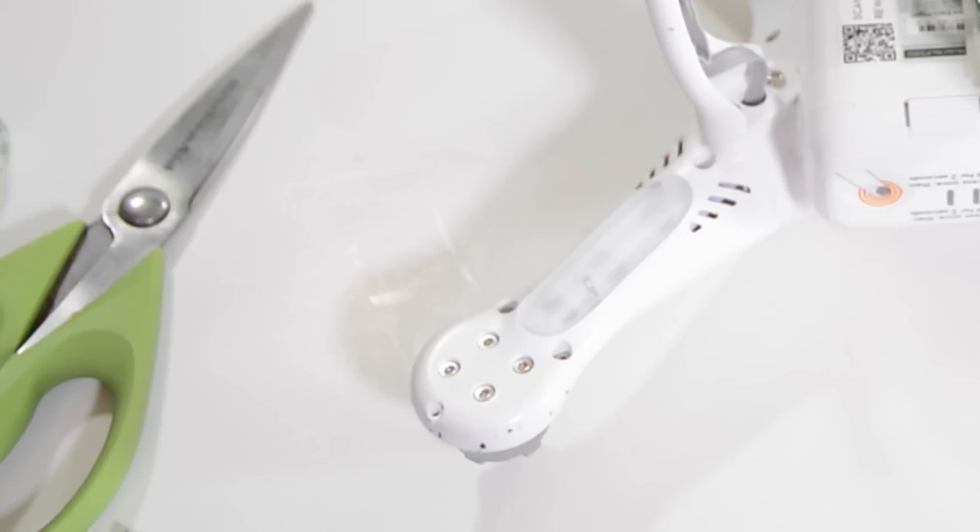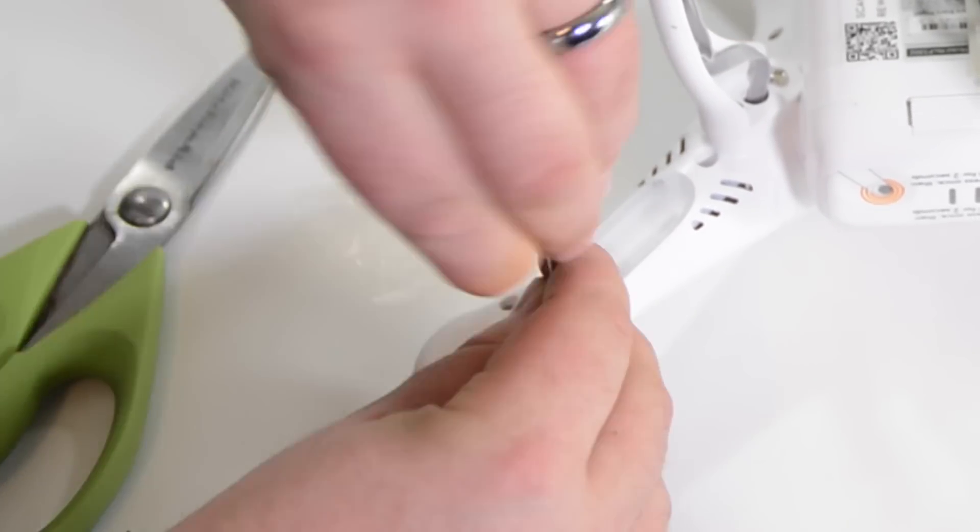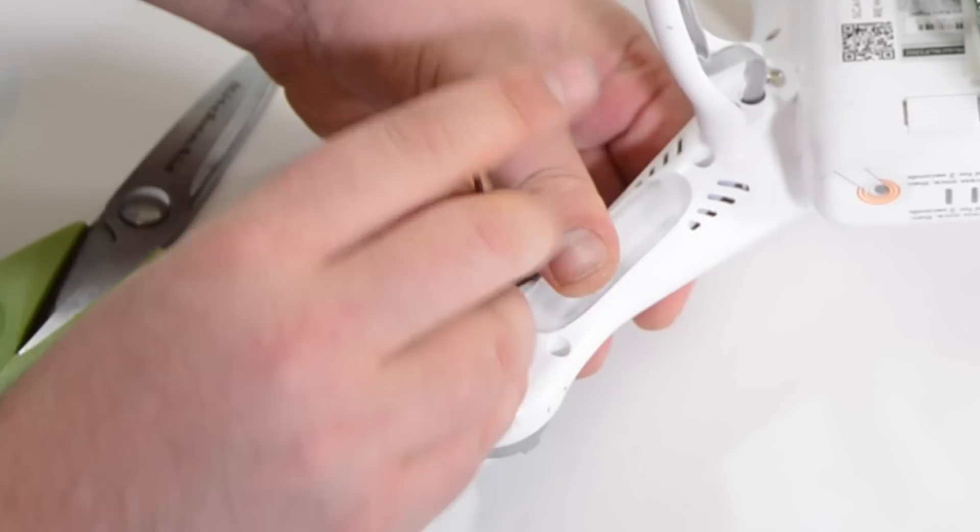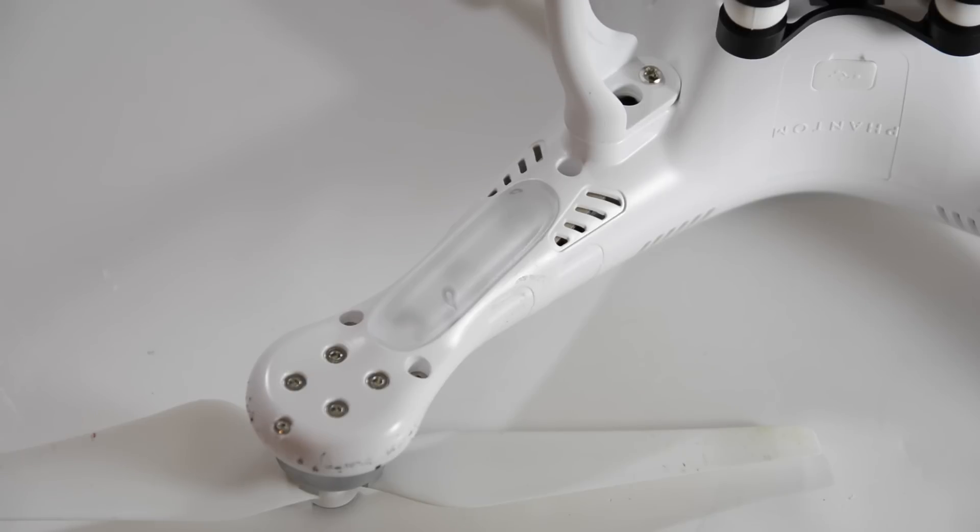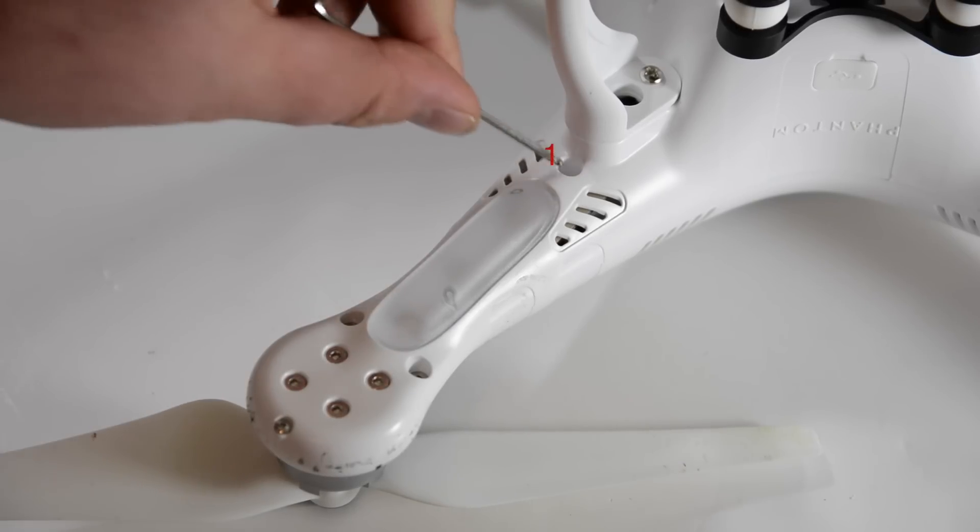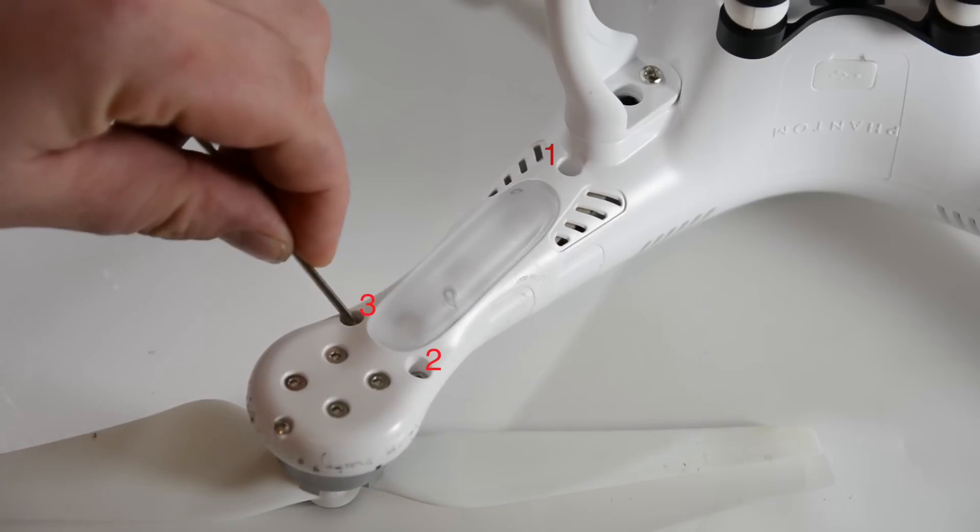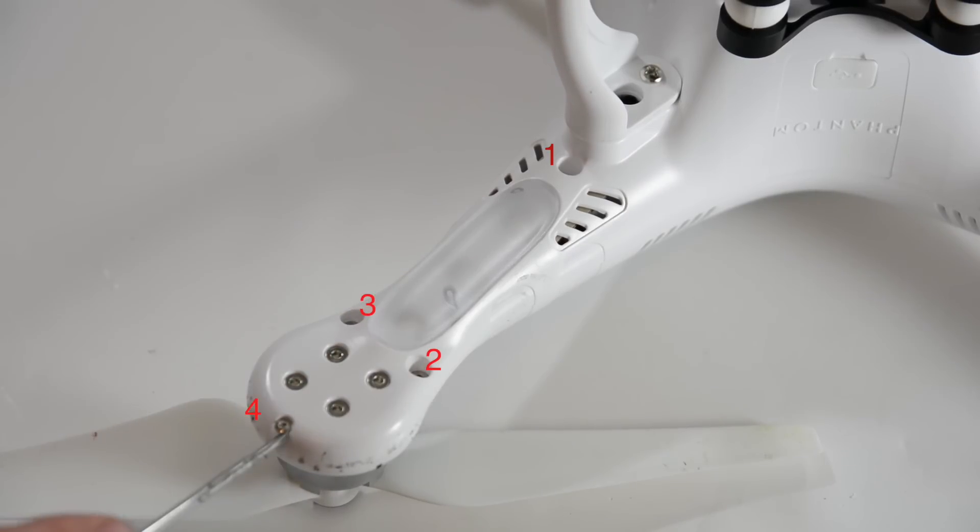Now there are 16 screws in order to get the lid of the quadcopter off. Four of them are located on each arm of the quadcopter. There are three allen wrench screws and then there are one Phillips screw at the tip of the arm.